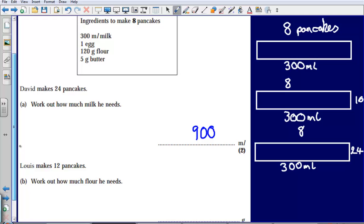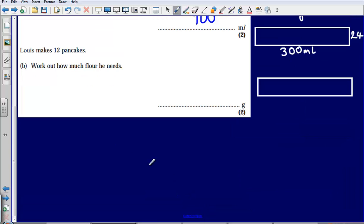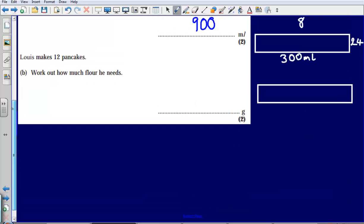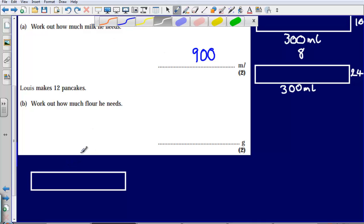Okay, let's take a look at our second example. So here we're told that Louis makes 12 pancakes. Work out how much flour he needs. So again I'm going to think about this in terms of a bar. I'm just going to use one of these from over here. So I'm making another 8 pancakes. This is going to represent my 8 pancakes. Let's do it down here just so it's separate from what we did a minute ago.